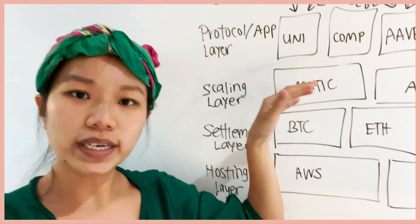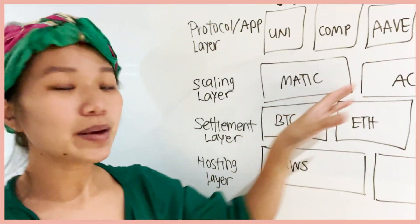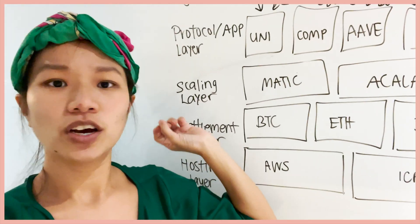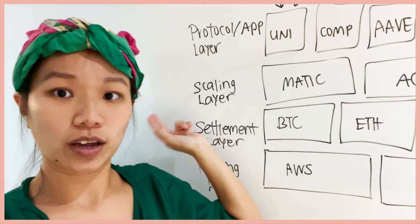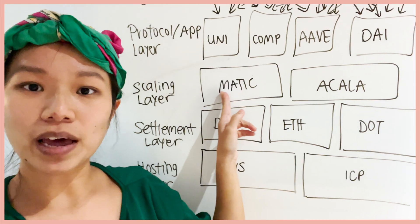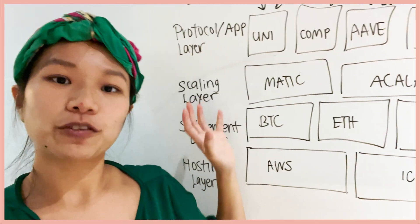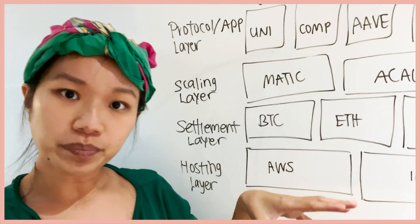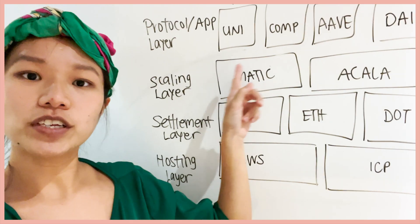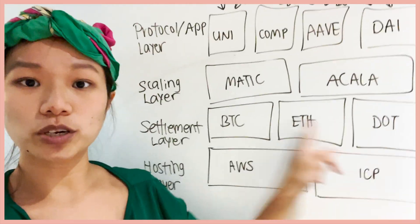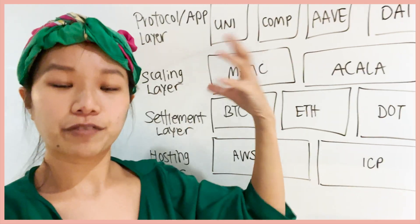Then we have the scaling layer. You don't really need it, but it's a way for you to create more transactions. There are many different types of scaling layers and classifications for them — I'm just going to group them all together and call them the scaling layer. You have stuff like Matic, you have stuff like Arcola, which are built on top of the settlement layer, but they are much faster, cheaper, and allow you to transact a lot better. At the end of the day, all settlement goes back to the bottom layers, but the scaling layer helps you execute more things at a faster rate and cheaper.